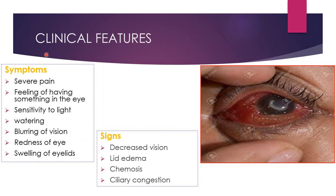A patient with corneal ulcer presents with severe pain, a foreign body sensation, photophobia — the inability to open the eye in bright light — watering, redness, lid swelling, and blurring of vision depending on the location and size of the lesion. On examination, vision is grossly reduced. There is lid edema and chemosis — the specific term for inflammation of the conjunctiva. There is circumcorneal congestion, which is more marked at the junction of the cornea and sclera.